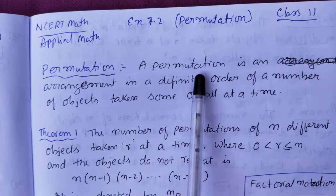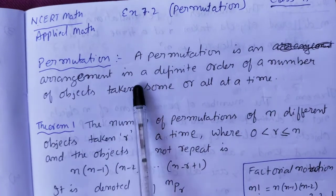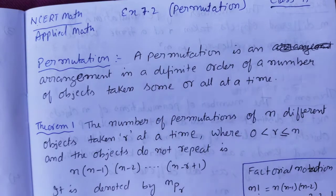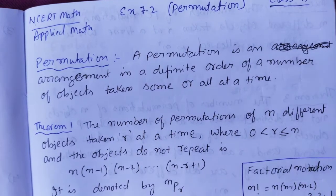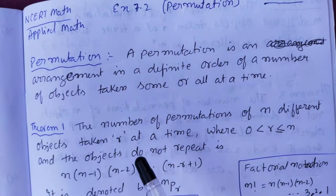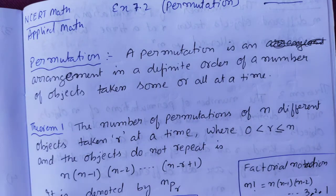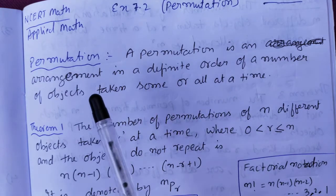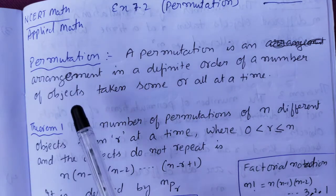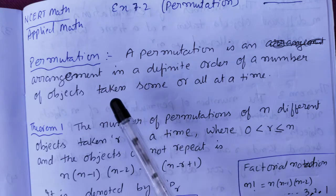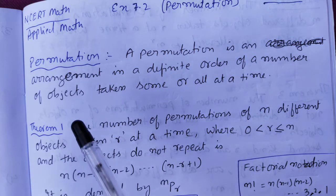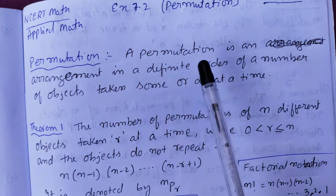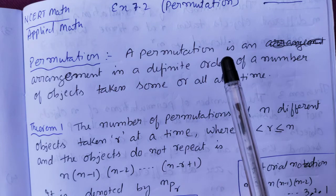A permutation is an arrangement in a definite order of a number of objects taken some or all at a time. That means permutation is the number of ways you can arrange things. When they say permutation, always think: in how many ways can we arrange? Like in the last video, I explained how many ways 3 pens and 2 shorts can be put.